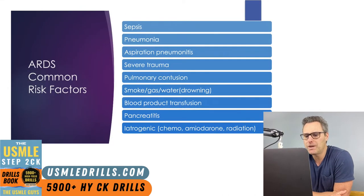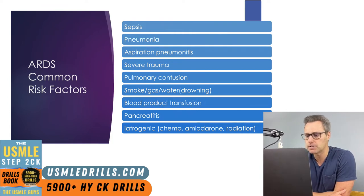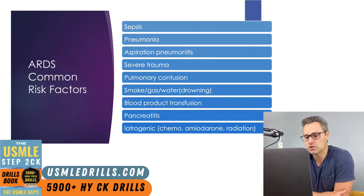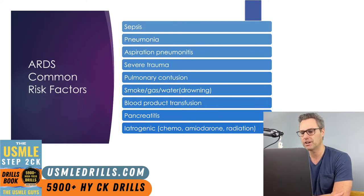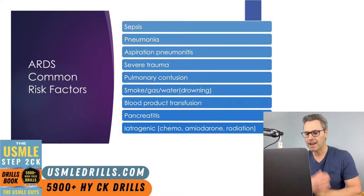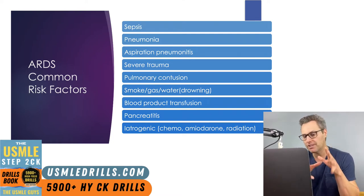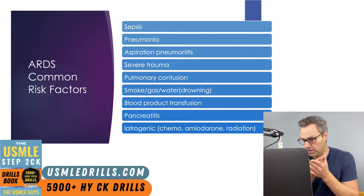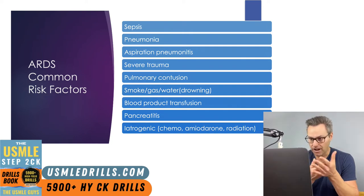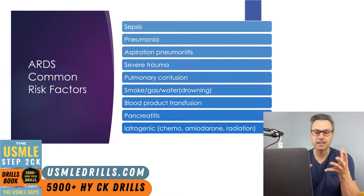Here we can see those clinical insults that can result in ARDS. Remember, sepsis is the number one cause, but there are a lot of potential infectious and non-infectious causes like pneumonia, trauma — especially if there are multiple fractures — as well as transfusion-related acute lung injury. Even pancreatitis can cause ARDS because circulating pancreatic enzymes can damage the endothelial membrane, increasing cytokines and leakage into the lungs, causing diffuse bilateral alveolar damage.